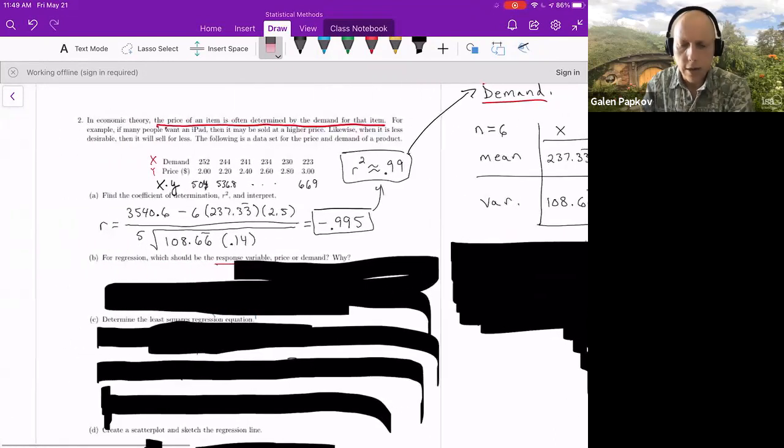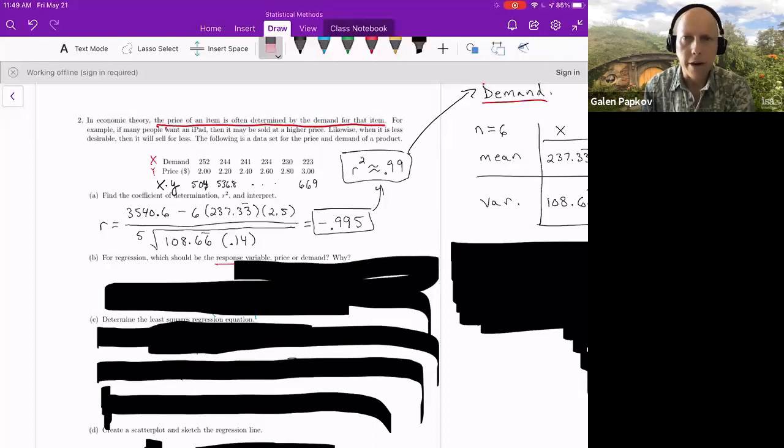So if you weren't sure where 2.5, 0.14, 237, 0.33, and so forth were coming from, I computed the means and variances first for this. And so once I got that, I ended up plugging into the formula and I get negative 0.995. Squaring that gives me 0.99.